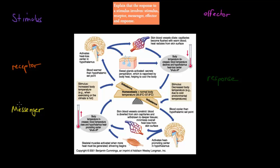In the last video, we talked about receptors and how they can help detect change, so detect the stimulus. In this video, we're going to cover something related, which is basically how a response happens and what steps need to take place to make sure a response can actually happen.